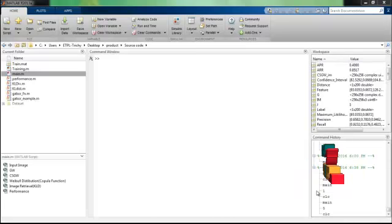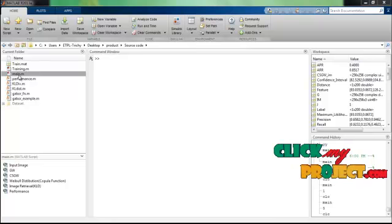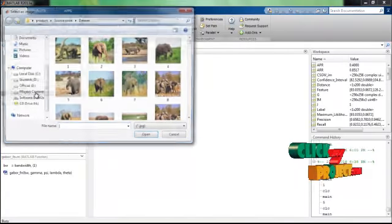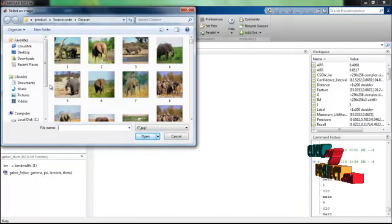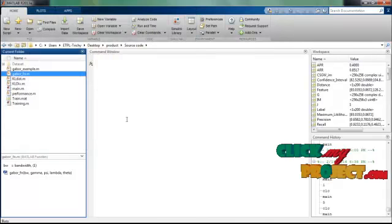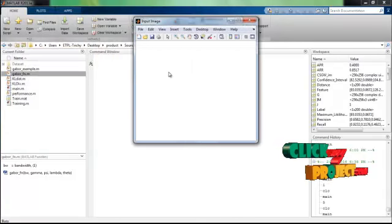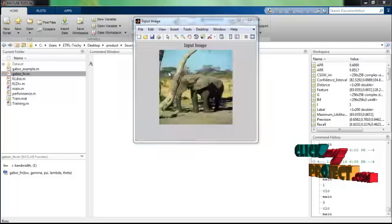Now let's see our project demo. First we have to run the main method. Then we have to select an input image. The first coming figure is the input image that we have selected.